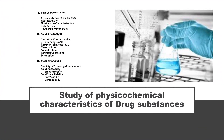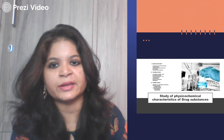When we talk about physical and chemical characterization of the drug substance, we will further discuss bulk characterization, crystallinity and polymorphism, hygroscopicity, fine particle characterization, bulk density, and powder flow properties. We will also cover solubility analysis, ionization constant, pH-solubility profile, common ion effects, thermal effects, solubilization, partition coefficient, and dissolution properties. Additionally, stability analysis covers stability in toxicology formulations, solution stability, pH-rate profile, solid-state stability, bulk stability, and compatibility.